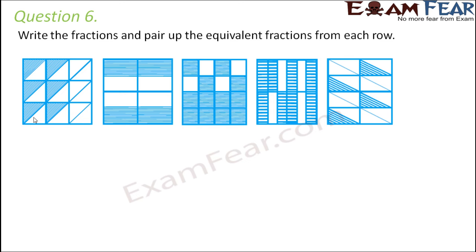For the first image we count the total number of triangles: 1, 2, 3, 4, 5, 6, 7, 8, 9, 10, 11, 12, 13, 14, 15, 16, 17, 18. So total we have 18 small triangles, and out of those how many are shaded? 1, 2, 3, 4, 5, 6, 7, 8 — so 6 out of 18 are shaded here.